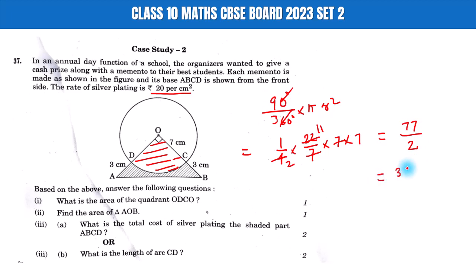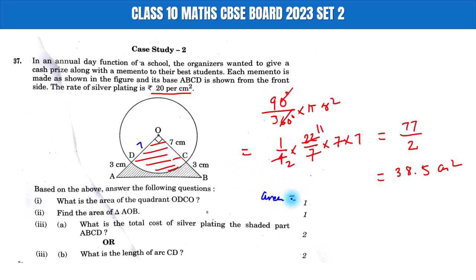For the second part, find the area of triangle AOB. Looking at the right triangle, the OD length is 7. The area is equal to half times base times height. The base is 10 here. Two fives are 50, so the area is 50 cm².